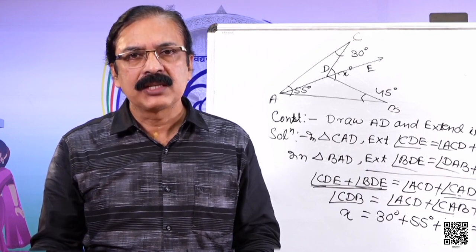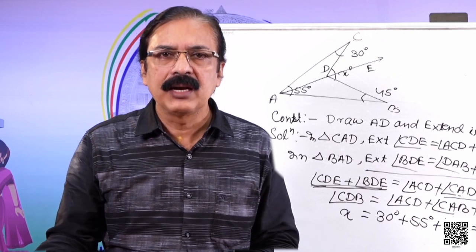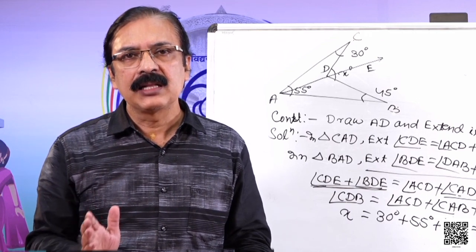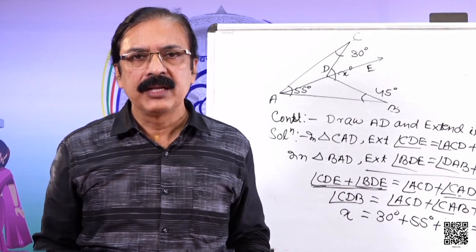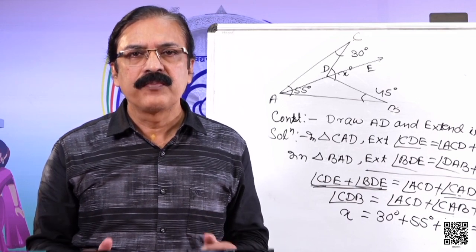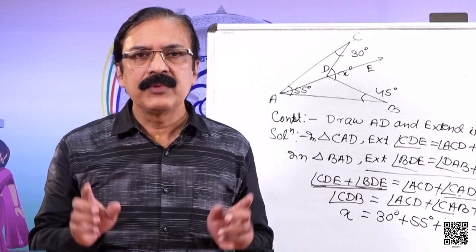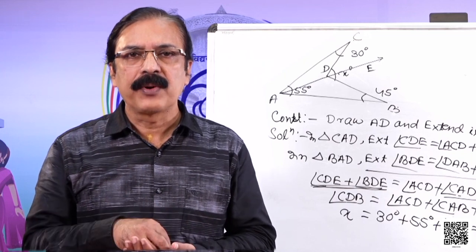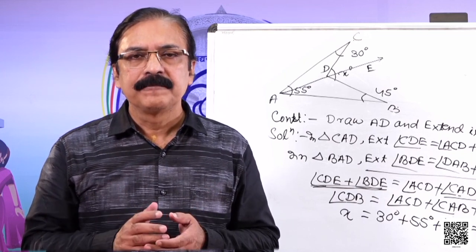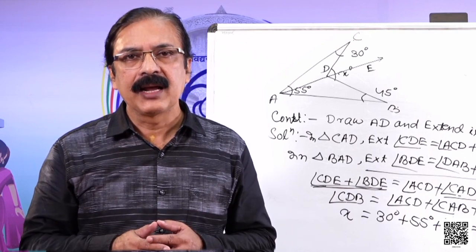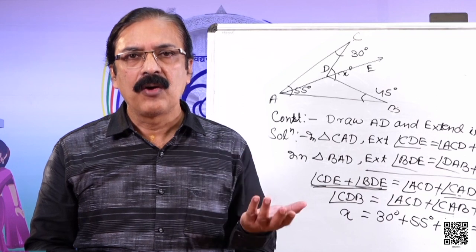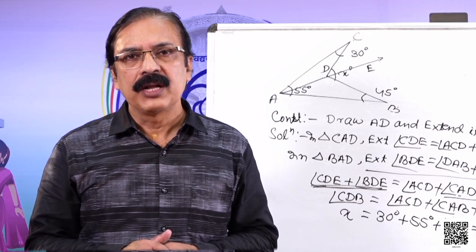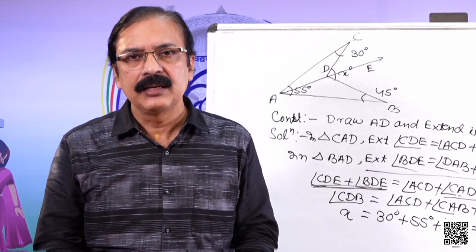Similarly, if a transversal intersects two parallel lines, then alternate interior angles are equal, and on the same side, the interior angles are supplementary. Using this, we also proved that the sum of the interior angles of a triangle is 180 degrees. And using this property, we also showed that the exterior angle of a triangle is equal to the sum of the opposite angles of the triangle. So dear students, this is the end of the lesson. Thank you.